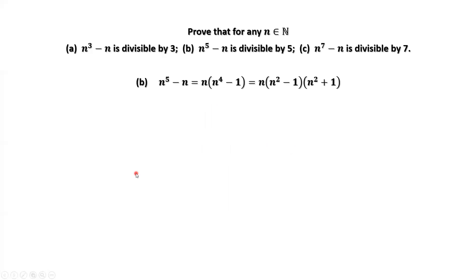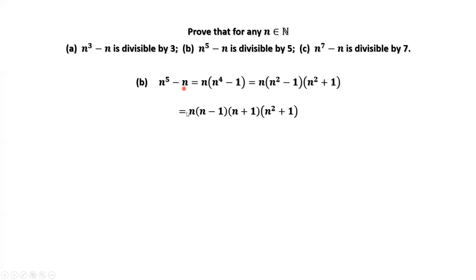For the second result, we factor N to the power of 5 minus N. Continuing to factor, we have N to the power of 5 minus N equals N times (N minus 1) times (N plus 1) times (N squared plus 1).